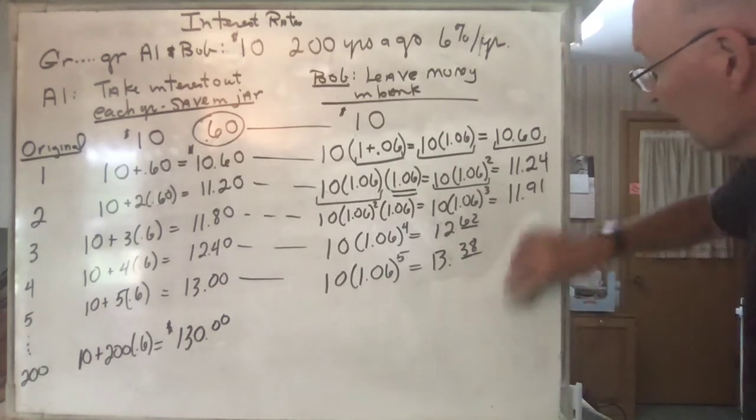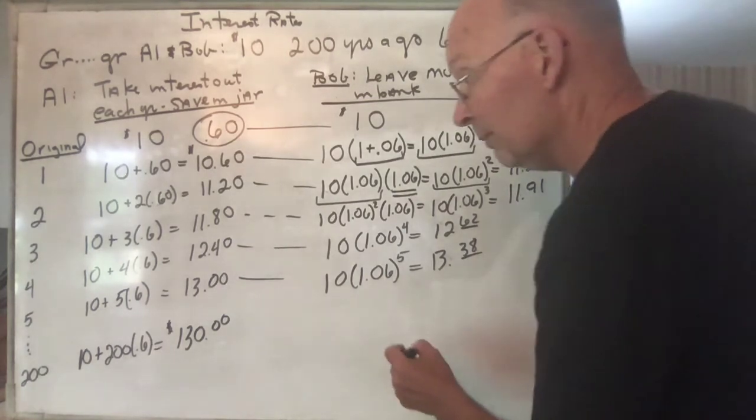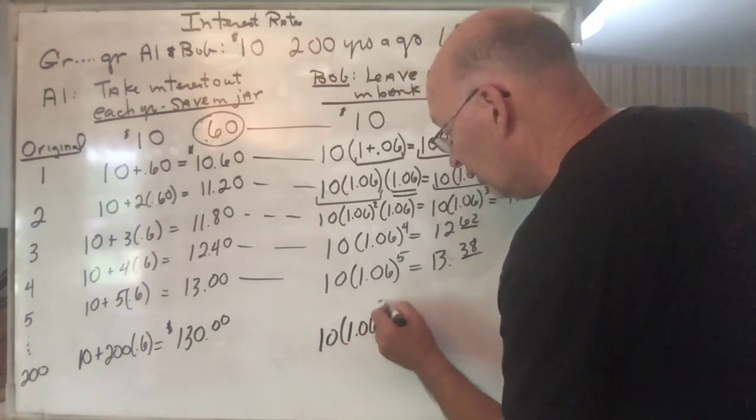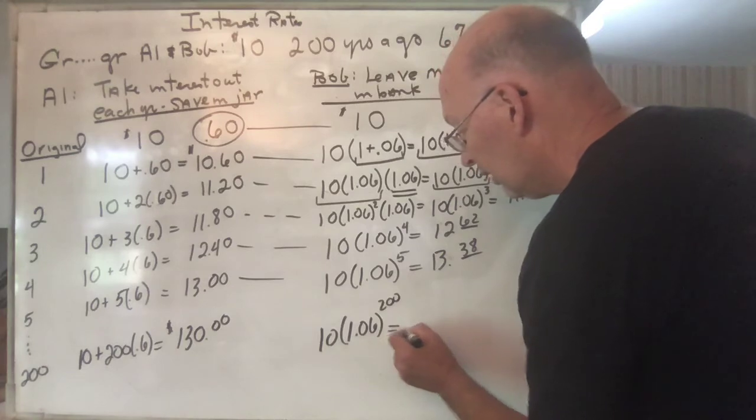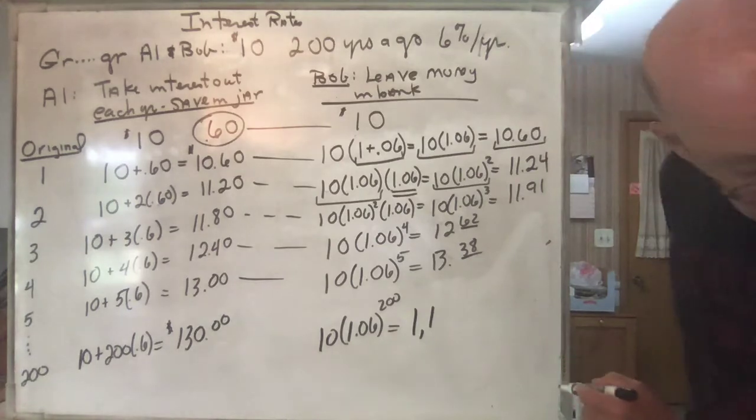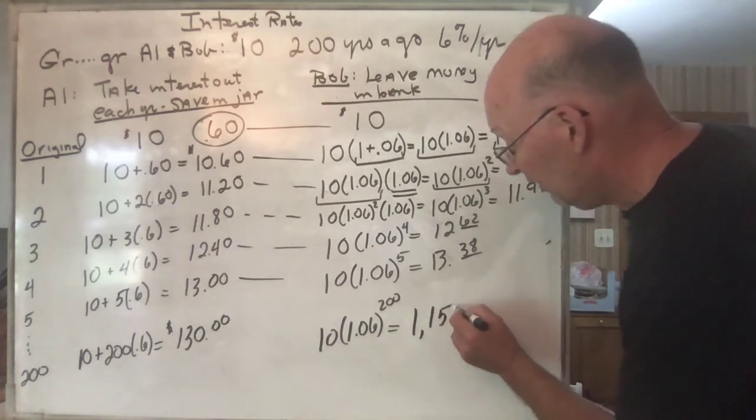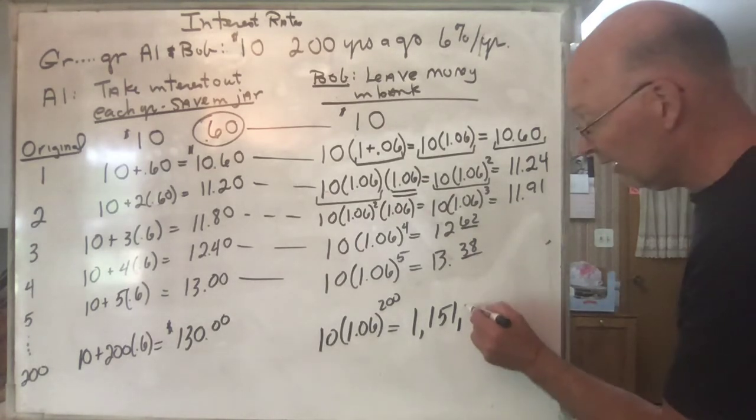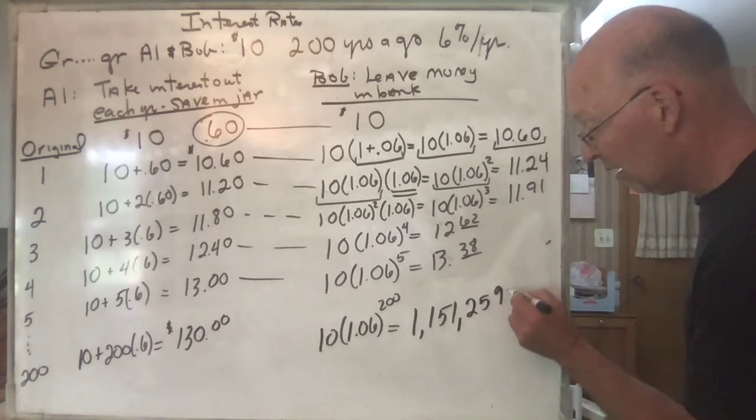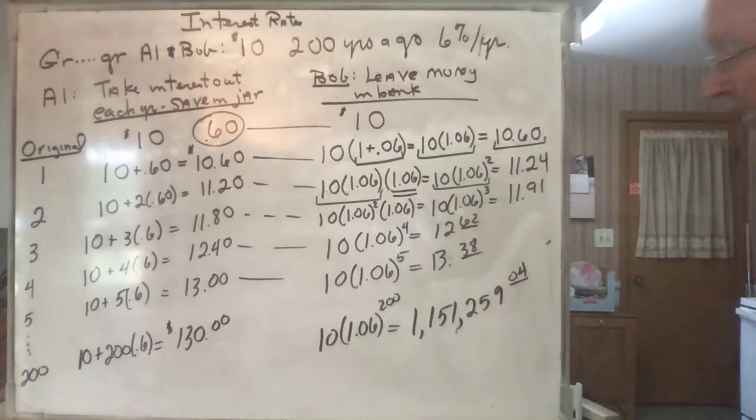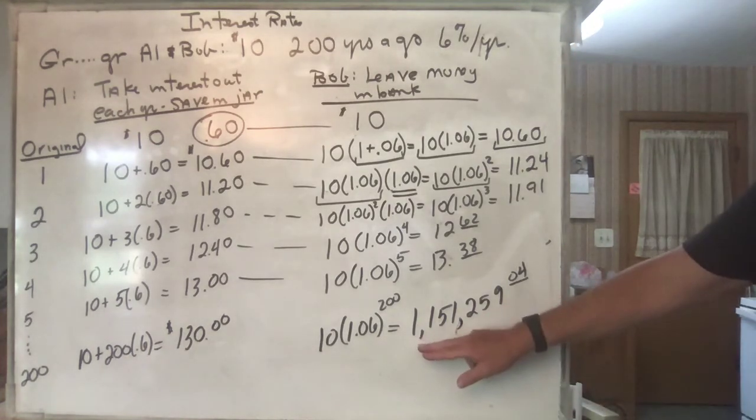And so what happens by the time you get down to 200 years? Turns out—maybe you've calculated it yourself, it's easy enough to do—10 times 1.06 to the 200th power is equal to 1,151... Look at that! Instead of $130, it's much bigger, and in fact I'm not done writing it yet.